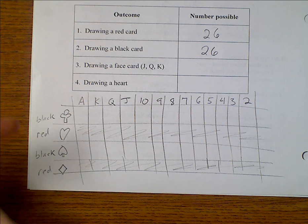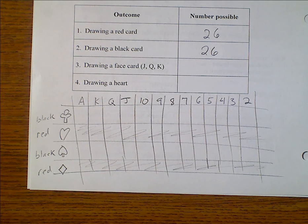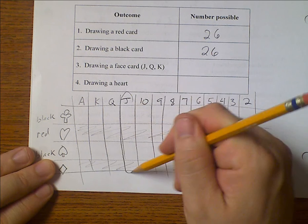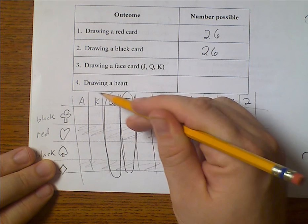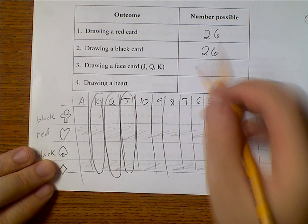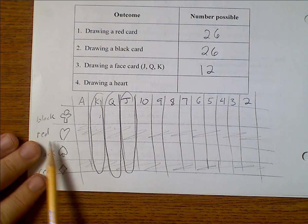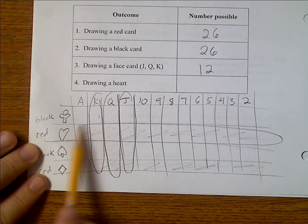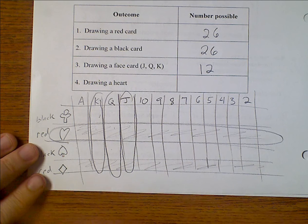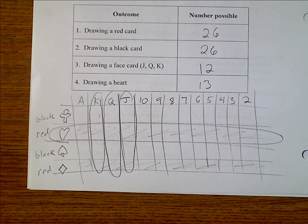How many black cards do I have? These and these would be black. So 13 and 13 again make 26 possible black cards. Now a face card, and here they clarify that they consider a face card being either jack, a queen, or a king. That would be all of those, all of those, and all of those. So 1, 2, 3, 4, 5, 6, 7, 8, 9, 10, 11, 12. If you're only considering jack, queens, and kings to be face cards, you have 12 possible outcomes. And now drawing a heart. All of these are our hearts, and there are 13 of them.